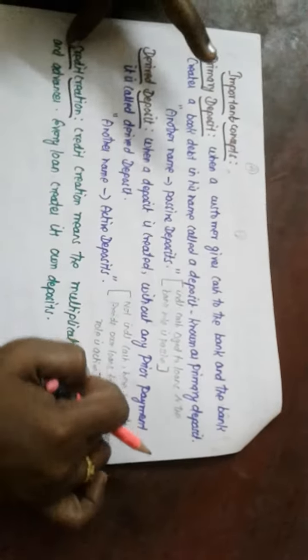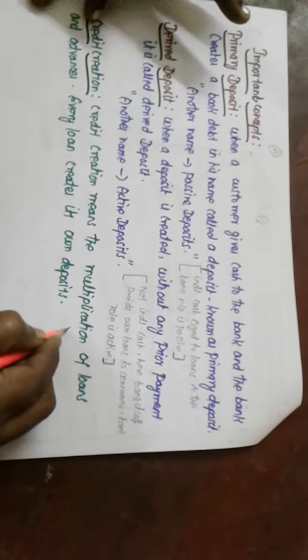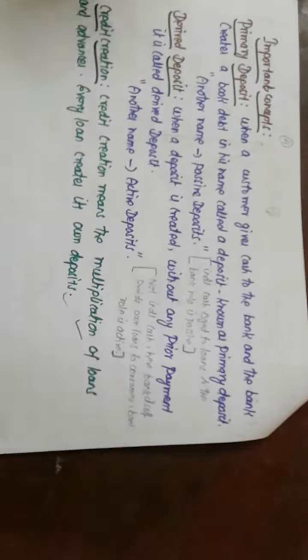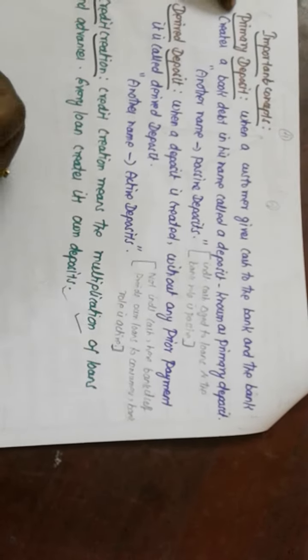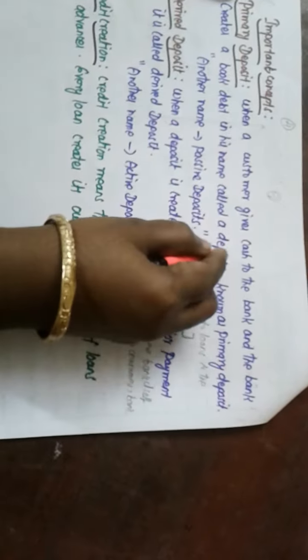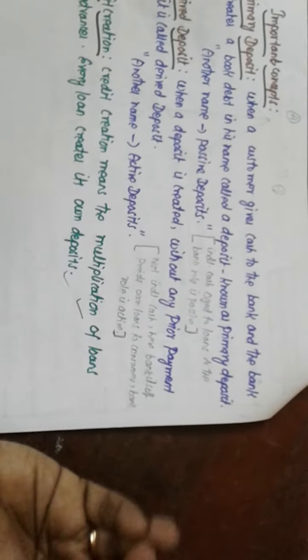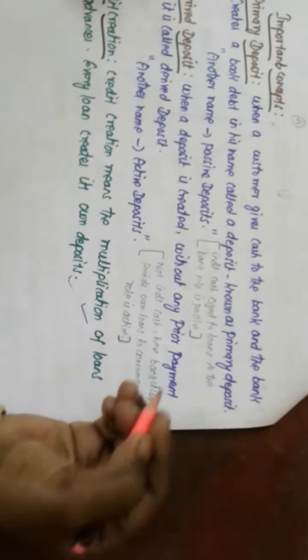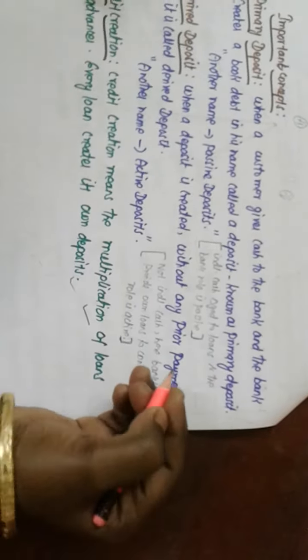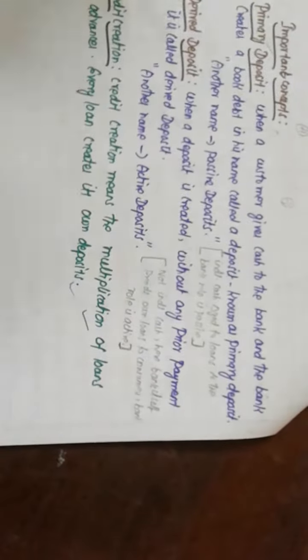There are two very important concepts: primary deposit and derived deposit. We've already discussed credit creation, which means multiplication of loans and advances. Primary deposit is when a customer gives cash to the bank and the bank accepts it in that person's name. Here the bank's role is always passive - they only accept the fund, like an LKG student.